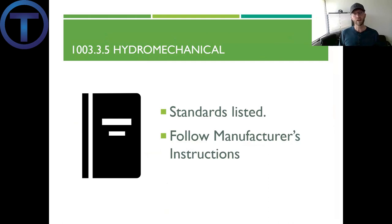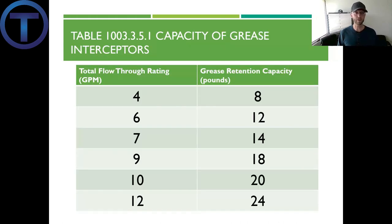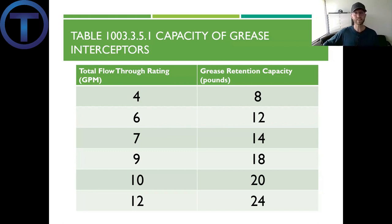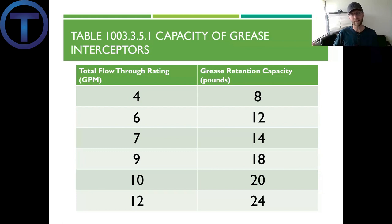Section 1003.3.5 talks about hydromechanical systems, listing standards they need to meet and stating we follow the manufacturer's installation instructions. For sizing a grease interceptor, there's a specific relationship demonstrated in Table 1003.3.5.1, which covers the capacity of grease interceptors. On the left is the total flow-through rate — the amount of fluid expected to be processed — and then there's the grease retention capacity. There's a two-to-one ratio: for every gallon per minute, there's a two-pound expectation on grease retention, so four gallons per minute should retain eight pounds, and so forth.